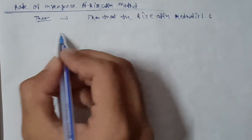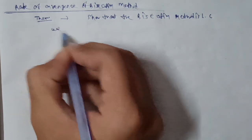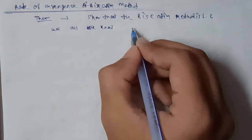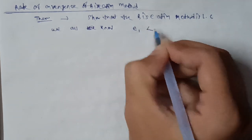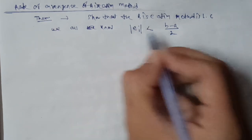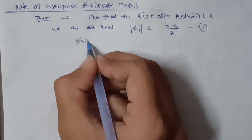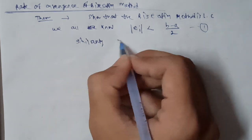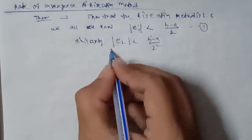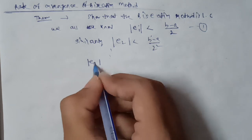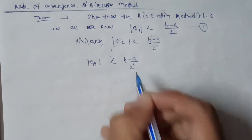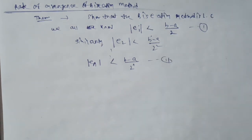Linear convergence. Let's start. We all know that the first error e₁ is less than (b - a) / 2, as shown in equation 1. Similarly, e₂ is less than (b - a) / 2². If we continue, the nth term error eₙ is less than (b - a) / 2ⁿ.